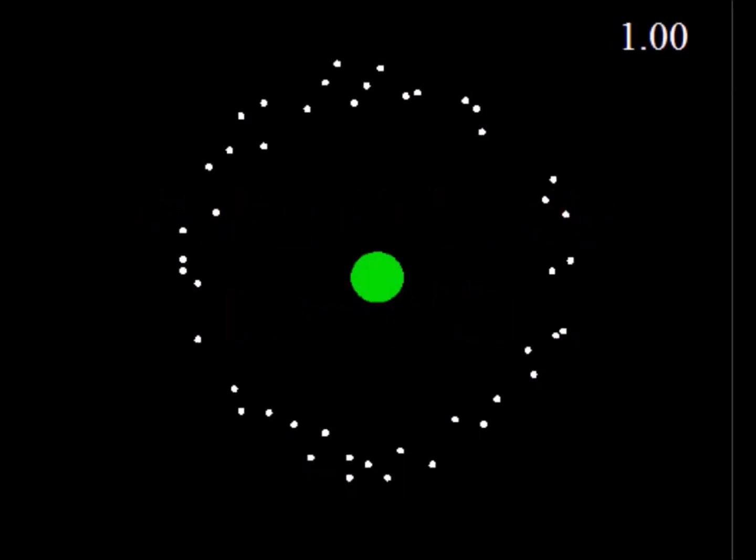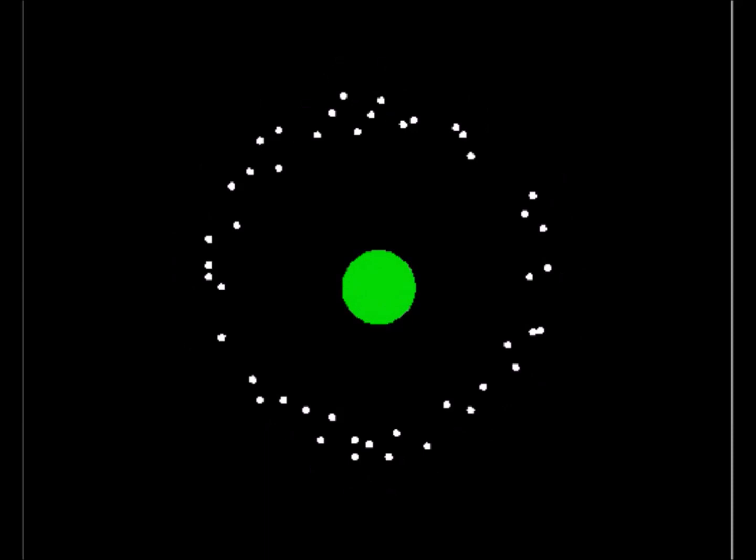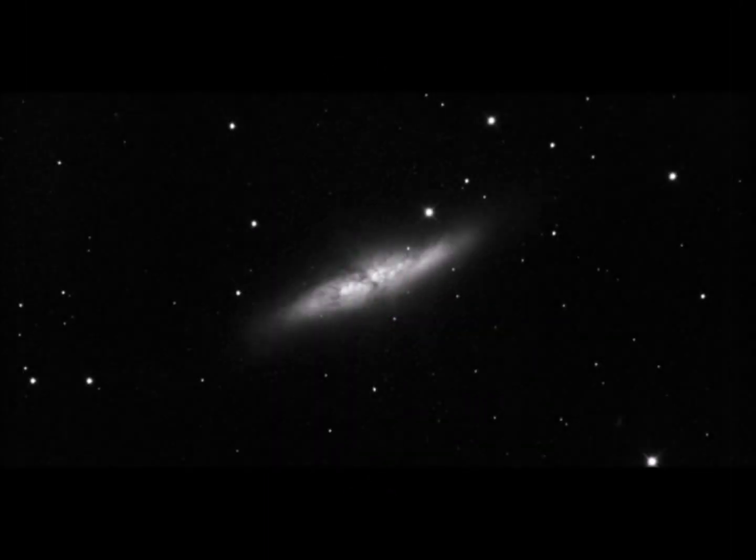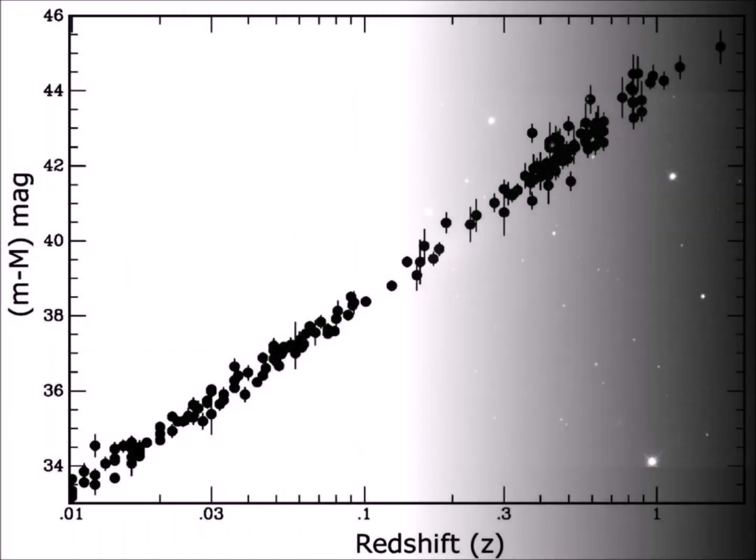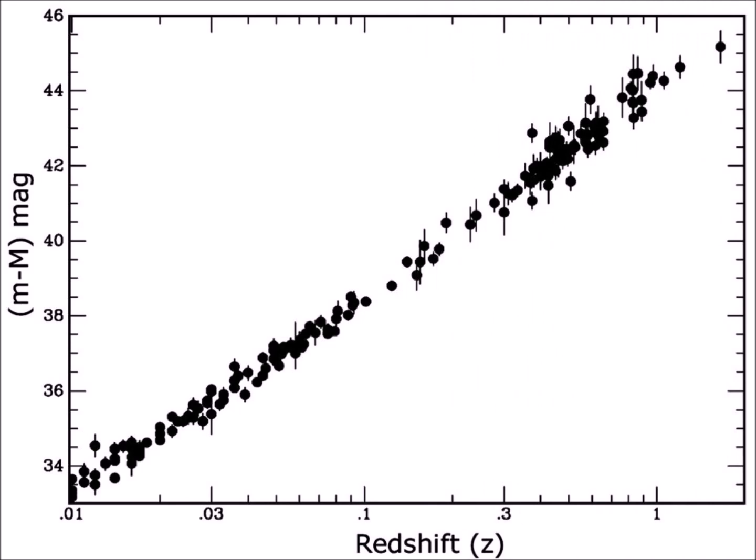Since the ether condenses in matter, the nuclei of the atoms must therefore grow gradually. The light that reaches us from very distant galaxies was emitted billions of years earlier. At that time the nuclei were smaller and therefore emitted red-shifted light compared to the emission of the same atoms today on Earth.